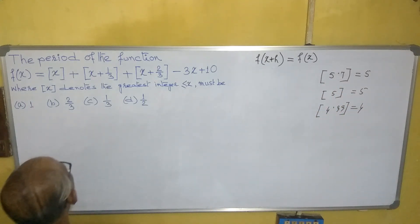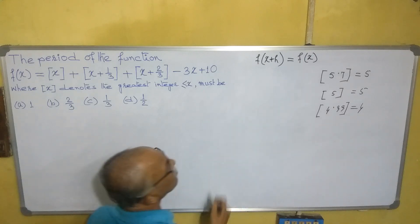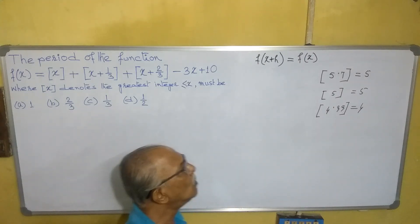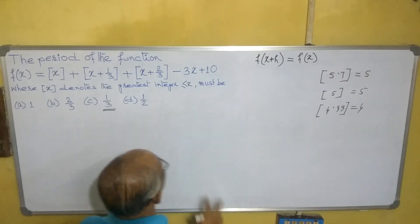Now come to this problem. I am showing you the easier method for MSQ questions. Since it is the least value of h for which it is true that is the period, you can choose the least value of the given options. Here the least value is 1/3. First of all, you will check whether this relationship is coming true or not.